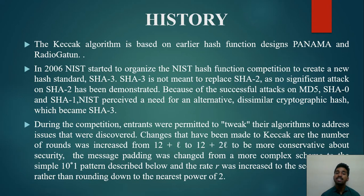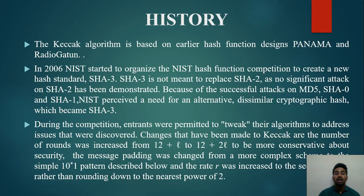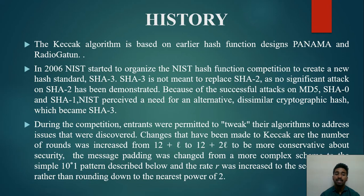During the competition, entrants were permitted to tweak their algorithms to address discovered issues. Changes made to KECCAK include: the number of rounds was increased from 12+L to 12+2L to be more conservative about security; the message padding was changed from a more complex scheme to the simple 10*1 pattern; and the rate R was increased to the security limit rather than rounding down to the nearest power of 2. Since there had been successful attacks on MD5, SHA-0, and SHA-1, NIST perceived a need for an alternative dissimilar cryptographic hash, which is where KECCAK won and SHA-3 was introduced.